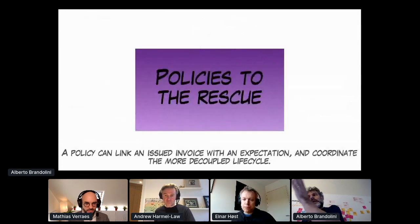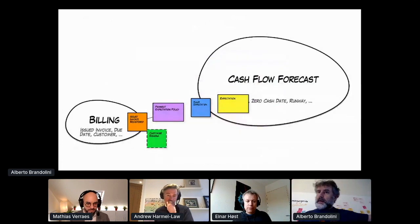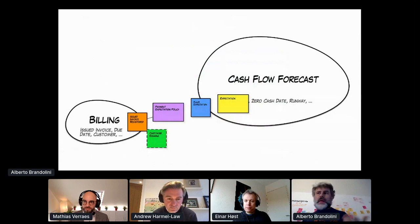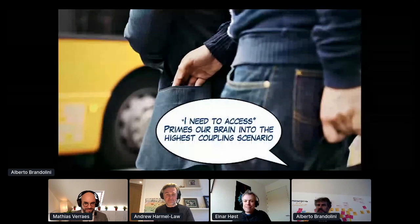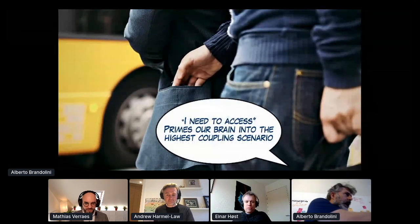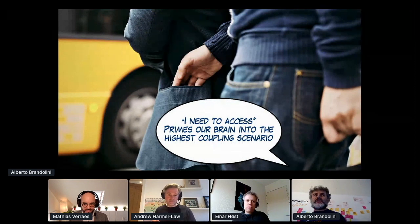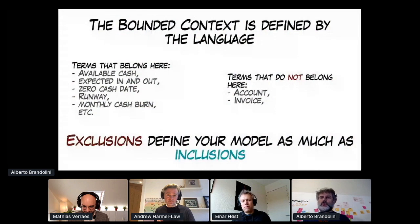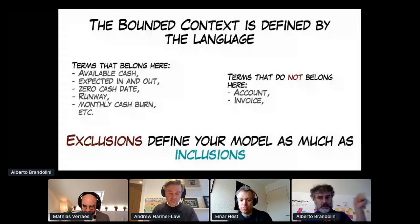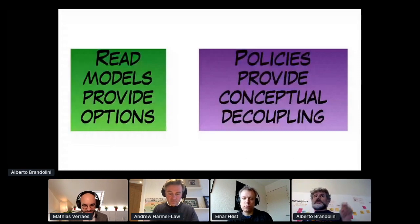There are other reasons for keeping it decoupled — it's not the same concept. And here, policies come to the rescue. We have something which belongs in billing — what you should invoice — and something that belongs to the cash flow forecast, which is the expectation. They were the same thing? No, they are not. So, closing the talk: what's in it for me? First, 'I need to access' primes our brain into the highest coupling scenario — catching data from another microservice or bounded context was acceptable inside the monolith, but it's not really working in a distributed architecture. Second, the bounded context is defined by the language, but exclusions are possibly even more important than inclusions. Third, read models provide you options to defer implementation choices, while policies provide conceptual decoupling between two concepts which are similar but yet not exactly the same thing. Thank you.